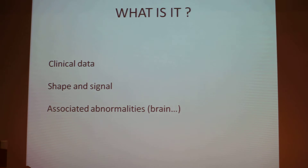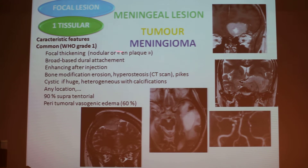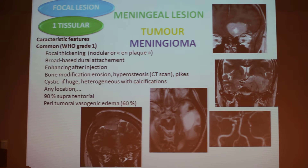Once we know the mass is extra-axial, clinical data, shape, signal, and associated abnormalities such as brain edema and bone changes will orient our diagnosis. To be simple, we'll separate different problems. The first problem: I have a focal region and it is tissue. The first and main cause of this lesion is a tumor — the meningioma. If somebody says there is an extra-axial mass, you say meningioma and you have an 80% chance of being right.